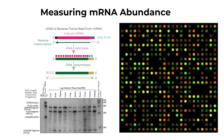Microarrays, like northern blots, are hybridization based. But in contrast to a northern blot, a microarray yields highly detailed information about the individual genes that have been transcribed. These signals are then detected, quantified, and used to create a digital image of the array. Finally, the digital image is used to identify the transcribed genes.